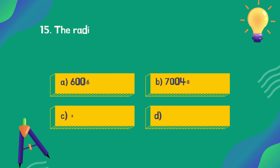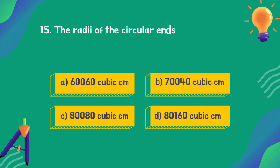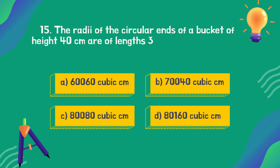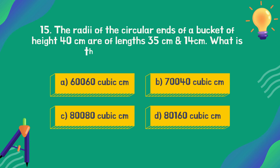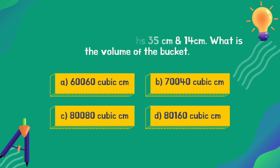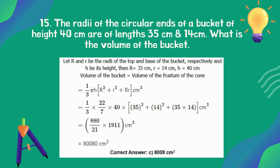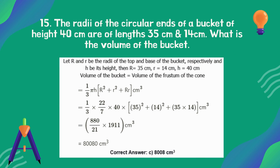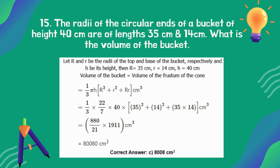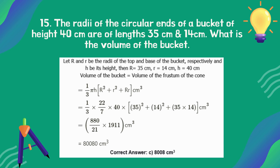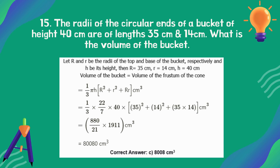The radii of the circular ends of a bucket of height 40 centimeters are 35 centimeters and 14 centimeters. What is the volume of the bucket? The correct answer is option C: 80,080 cubic centimeters.